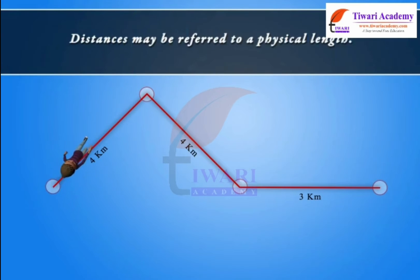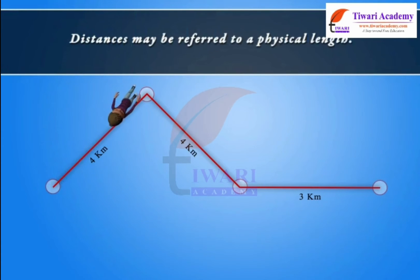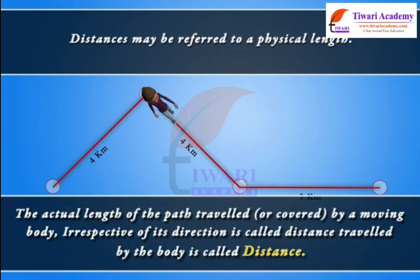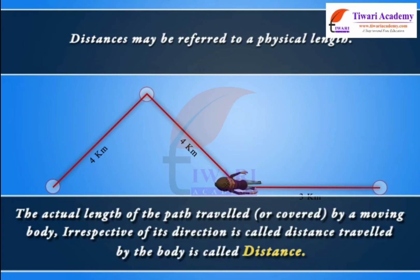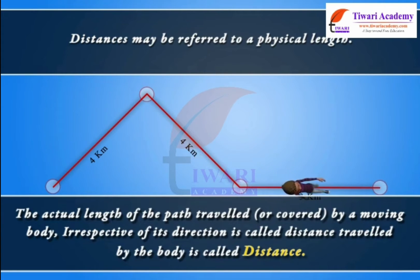Distances may be referred to a physical length. The actual length of the path traveled or covered by a moving body, irrespective of its direction, is called distance traveled by the body.